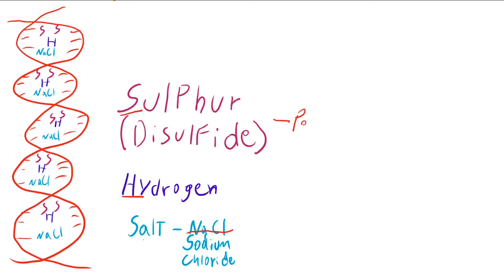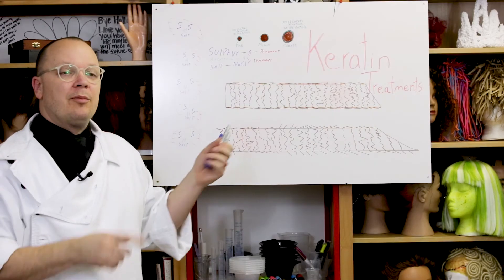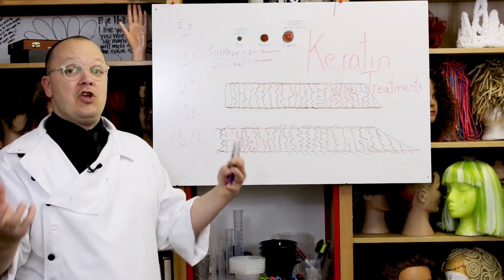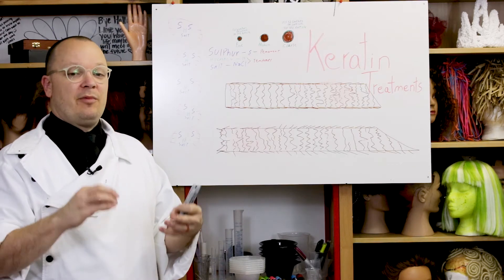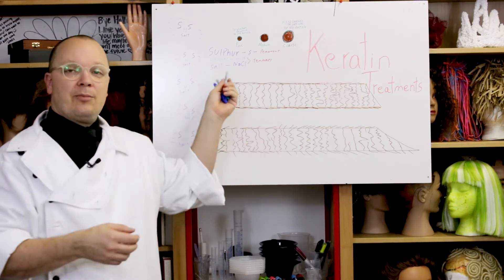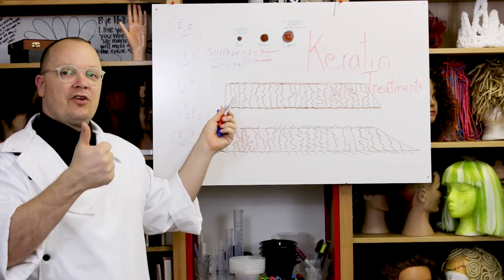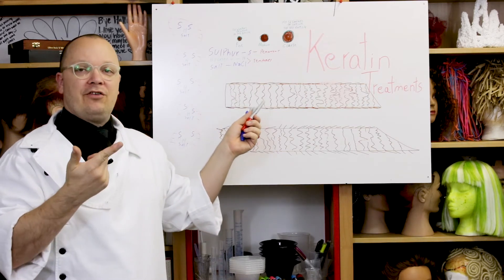Now when we're thinking about these three bonds, we have permanent and temporary bonds. Your sulfur bond is a permanent bond. Your hydrogen and salt bonds are temporary. When we're doing things like styling the hair with a blow dryer, a curling iron, doing a wet set, when you set your hair and then you get it wet, that's a form of reshaping these temporary bonds. Both the hydrogen and the salt bonds are reshaped with moisture and heat or combination of those things.